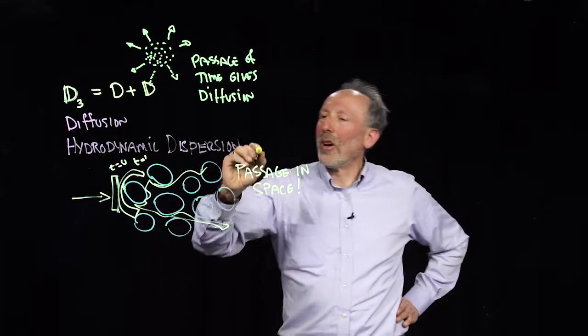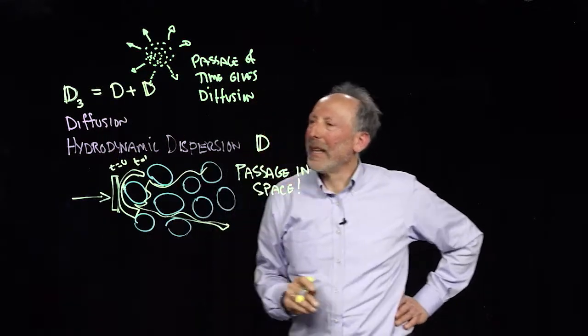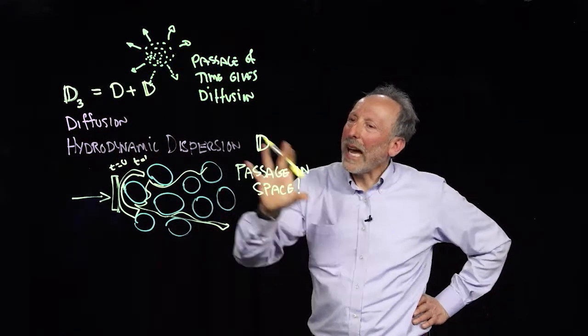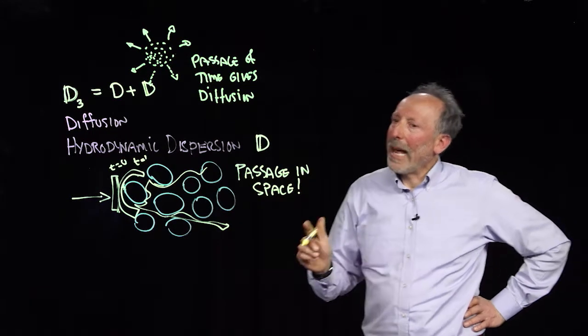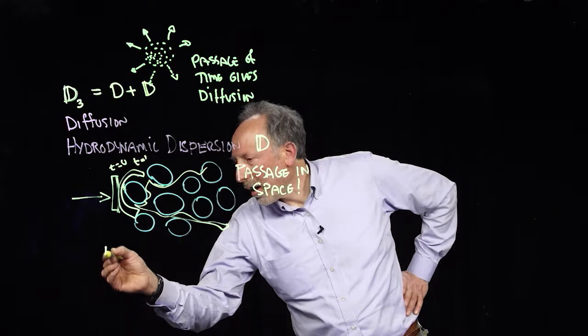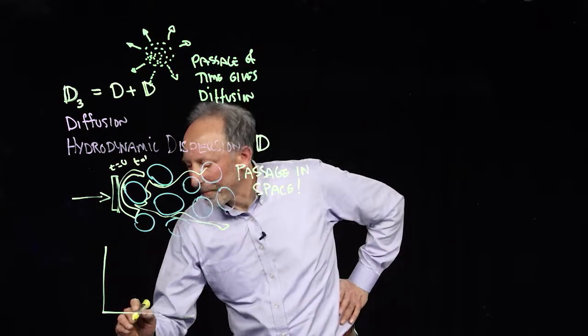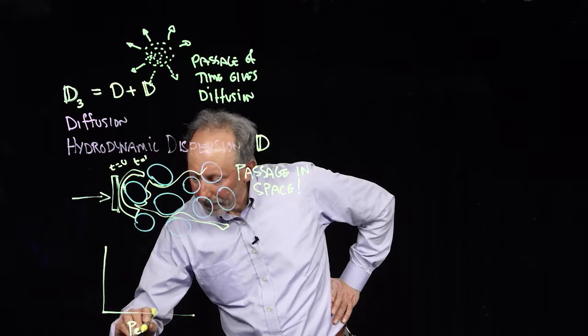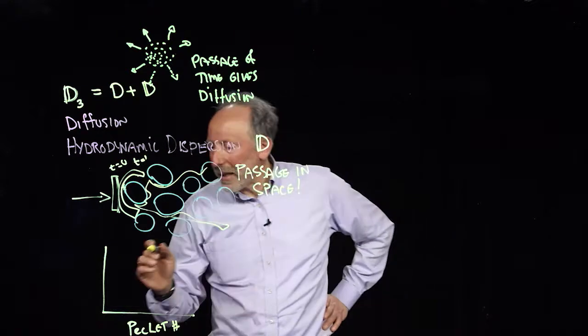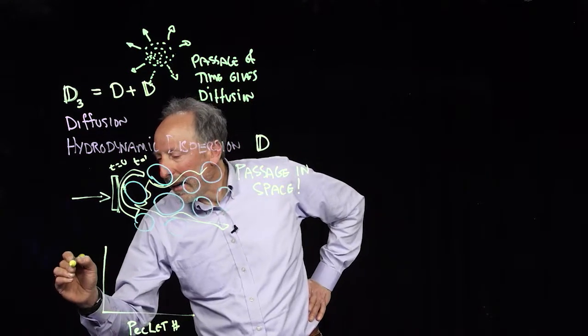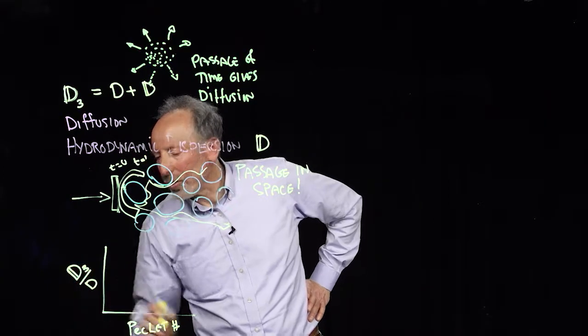So I will call dispersion a double back D, and I'll put the three under it and call that the sum of the two. And so that would be the types of dispersion and diffusion that we have. And what we do then is we draw what's called, we calculate the Peclet number.